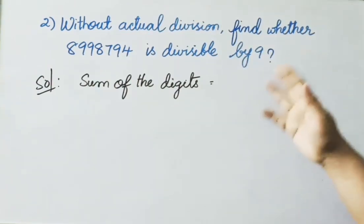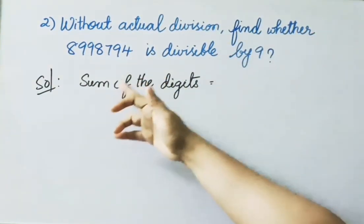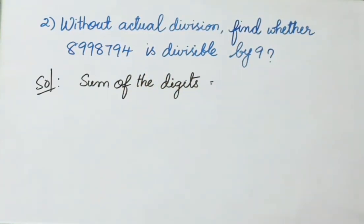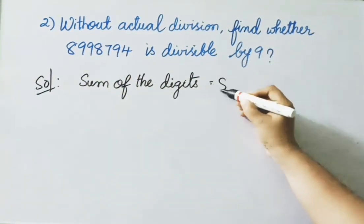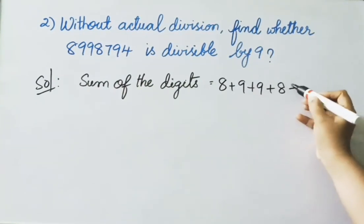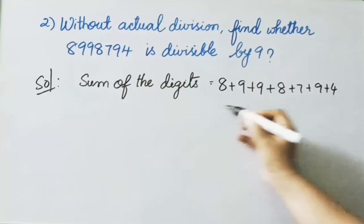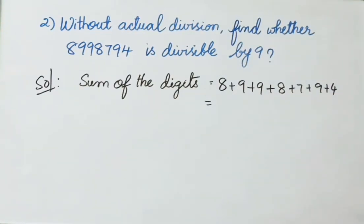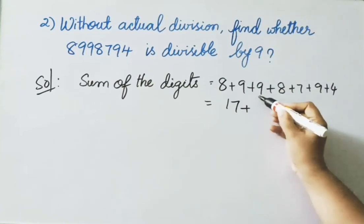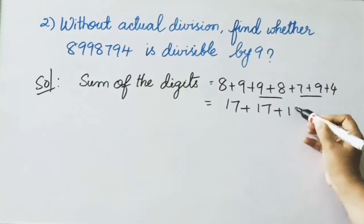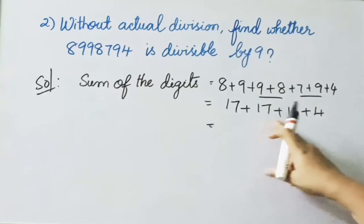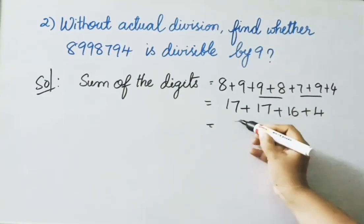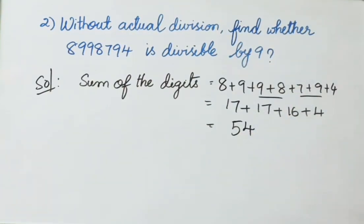Second sum: Without actual division, find whether 8,998,794 is divisible by 9. Sum of digits: 8 plus 9 plus 9 plus 8 plus 7 plus 9 plus 4. Adding step by step: 8 plus 9 is 17, 9 plus 8 is 17, 7 plus 9 is 16, plus 4. Combining: 17 plus 17 is 34, plus 16 is 50, plus 4 is 54. Since 54 is divisible by 9, the given number is divisible by 9.